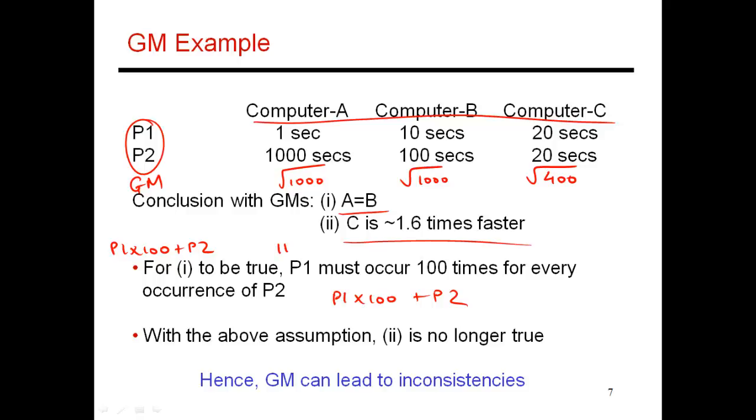On system A, that execution time will be 1100 seconds. On system B, it will also be 1100 seconds because I've carefully chosen the ratio of P1 and P2. But on system C, that total execution time is much higher, which is opposite of what I had concluded based on the GMs. And that is the disadvantage of using geometric means. It may sometimes be impossible to construct a workload which matches the conclusions that your geometric means gave you.